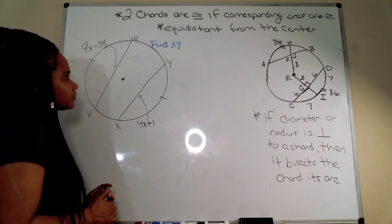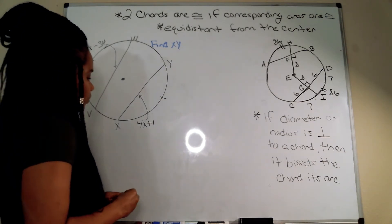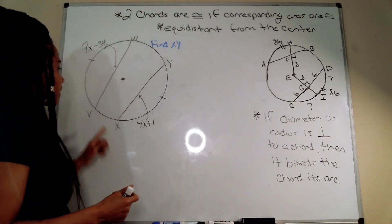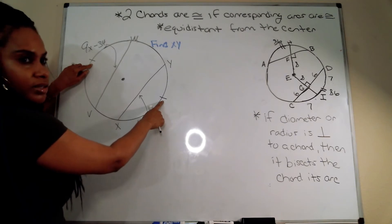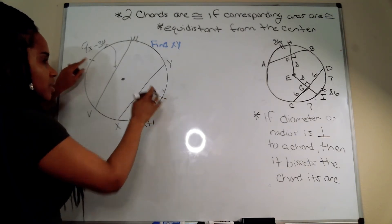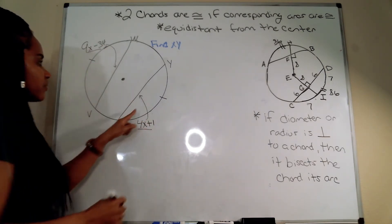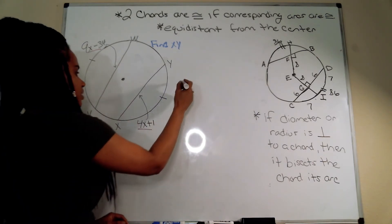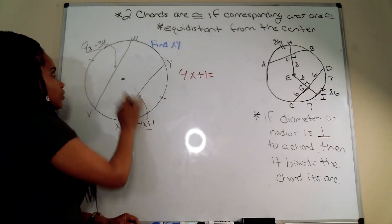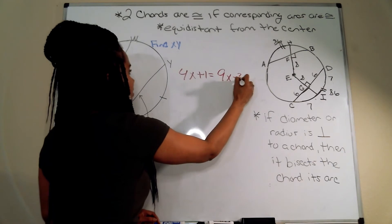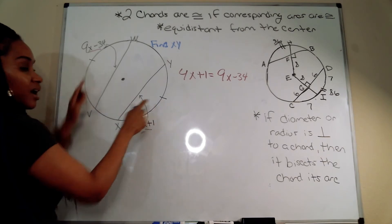The first example asks us to find XY. We're given two chords, VW and XY. We can see they have corresponding arcs that are congruent — marked with congruence marks — so the chords are congruent as well. We have an expression for each chord, so we set them equal: 4x + 1 equals 9x minus 34.